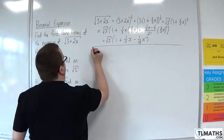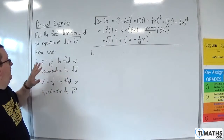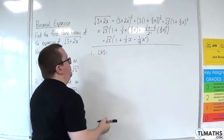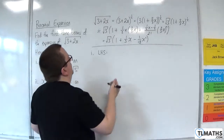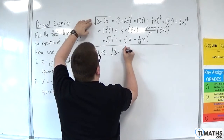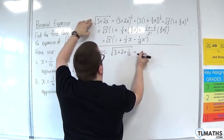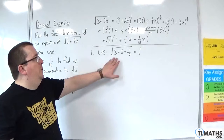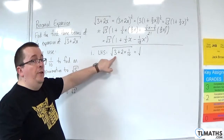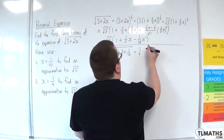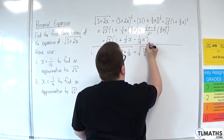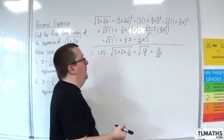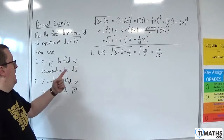For part 1, we use x equals 1 tenth to find the approximation to root 5. Let's look at the left-hand side first — we substitute in x equals 1 tenth. So we've got the square root of 3 plus 2 lots of 1 tenth. Now 2 times 1 tenth is 1 fifth, so we've got 3 plus 1 fifth. 3 is 15 fifths plus 1 fifth, so we get 16 fifths. This is the square root of 16 fifths, which gives 4 over root 5.